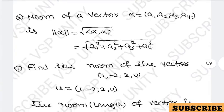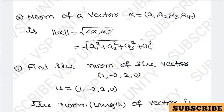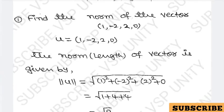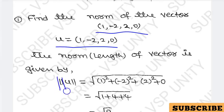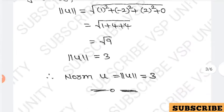Example: find the norm of the vector u equals (1, -2, 2, 0). The norm is the square root of 1 squared plus (-2) squared plus 2 squared plus 0 squared, which equals the square root of 1 plus 4 plus 4 plus 0, equals the square root of 9, which equals 3. So norm(u) equals 3.